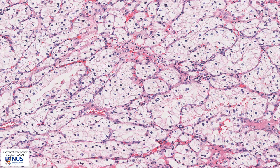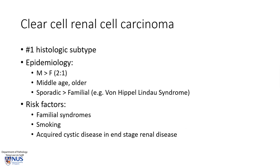Clear cell carcinoma is the commonest histologic subtype of renal cell carcinoma. It is usually found with a slight male predominance in middle-aged or older adults. Most cases are sporadic; however, they do also occur in a familial context, for example in patients with von Hippel-Lindau syndrome and other syndromes. Risk factors include familial syndromes, a history of smoking, as well as end-stage renal disease with acquired cystic disease, where the tumors may arise.